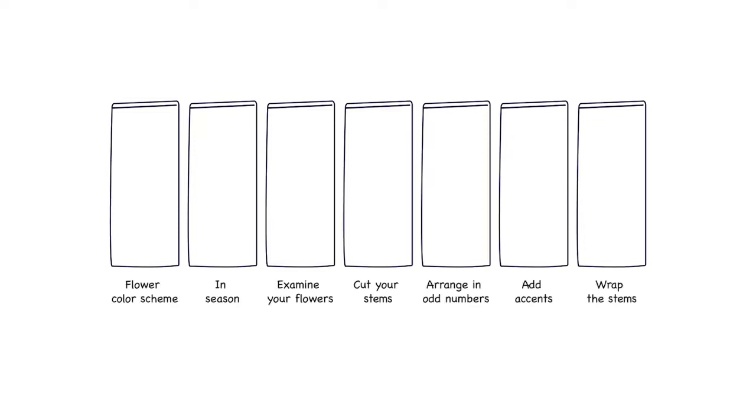Let's make our boxes or panels. Since we're designing for Instagram stories, we'll make our panels rectangular to mimic the phone screen. Since we want to tell a story here, let's title our boxes with the steps we want to include, from choosing a flower color scheme to arranging and wrapping up the stems.